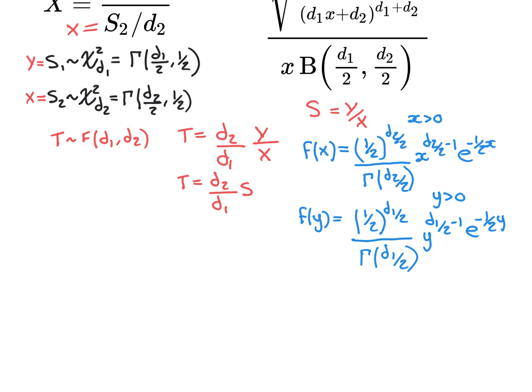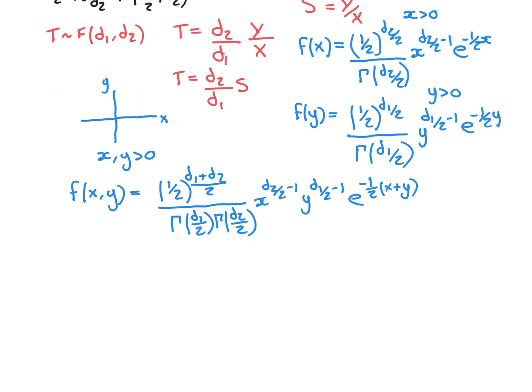Likewise, for the Y random variable — which is gamma distributed with parameters d1/2 and 1/2 — the PDF is non-zero only when y > 0, and it's the same formula with d2/2 replaced by d1/2 and x replaced by y. So the joint PDF over the whole R² plane is only non-zero in the first quadrant where both x > 0 and y > 0, which simplifies things.